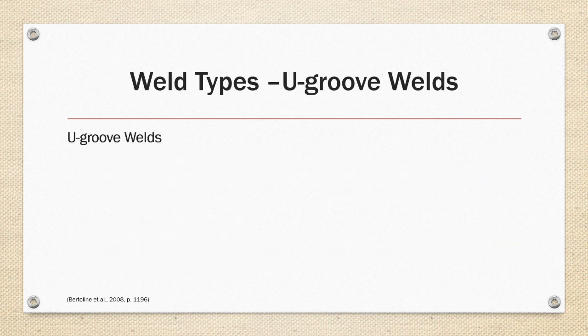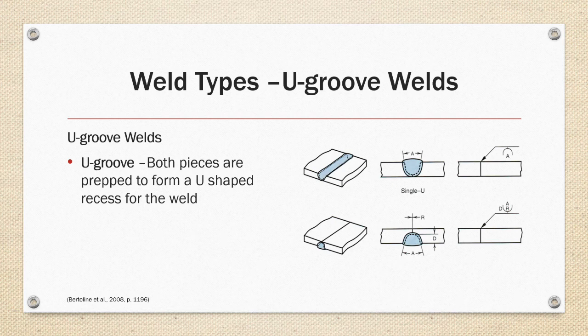U-groove welds: in a U-groove, both pieces are prepped to form a U-shape recess for the weld. The first example shows a full penetration single U-groove weld performed from the same side as the arrow. The second example shows a U-shape weld performed from the opposite side of the arrow, at a defined depth that doesn't come fully through the part, with a defined gap of R.